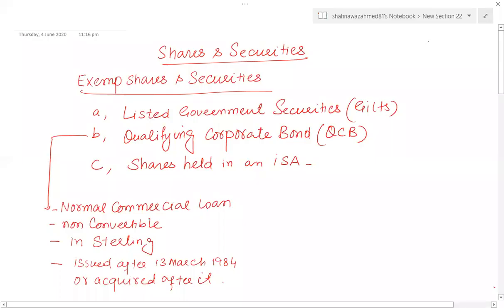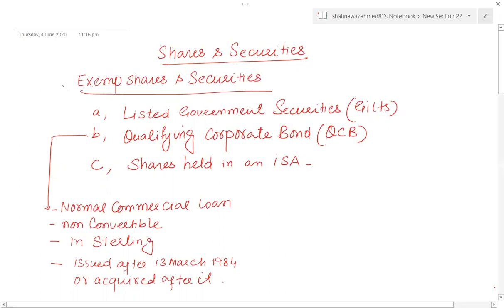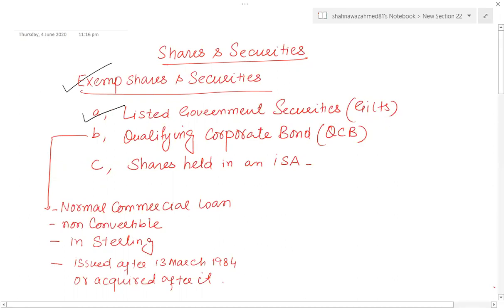In this lecture we will discuss how to deal with shares and securities regarding chargeable gain tax. The following types of securities are exempt with no CGT consequences: listed government securities (treasury stocks or gilts), qualifying corporate bonds, company loan stocks, and shares held in an ISA. Note that gilts and qualifying corporate bonds are exempt for individuals, but not for corporations.